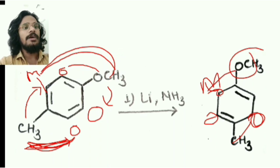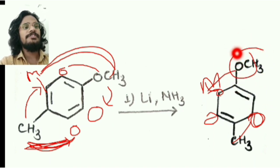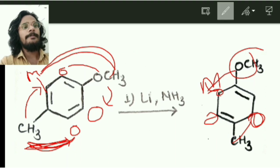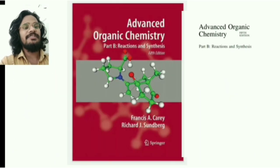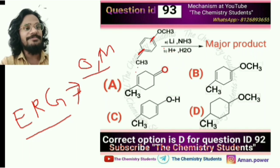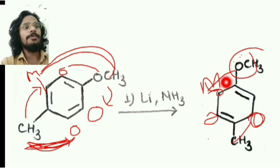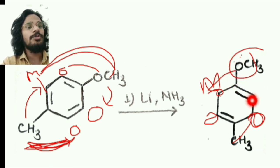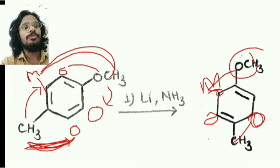This is your enol ether. You can see there is a non-bonding electron pair. Under the reaction conditions with H⁺ and in the presence of H₂O, this is the protonation step. The non-bonding pair attacks here and this bond migrates to the hydrogen or proton, resulting in the formation of a cyclic ketone.